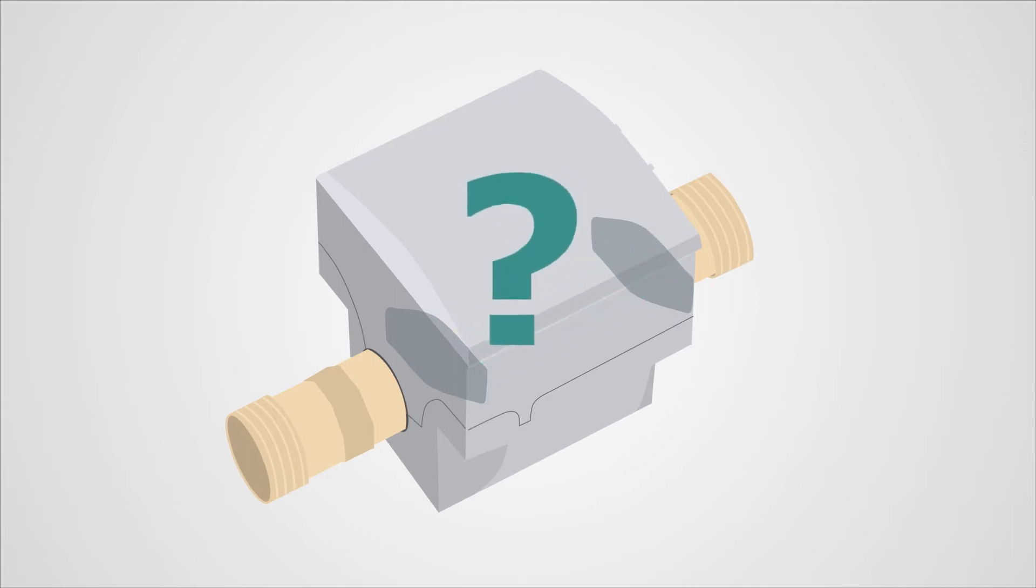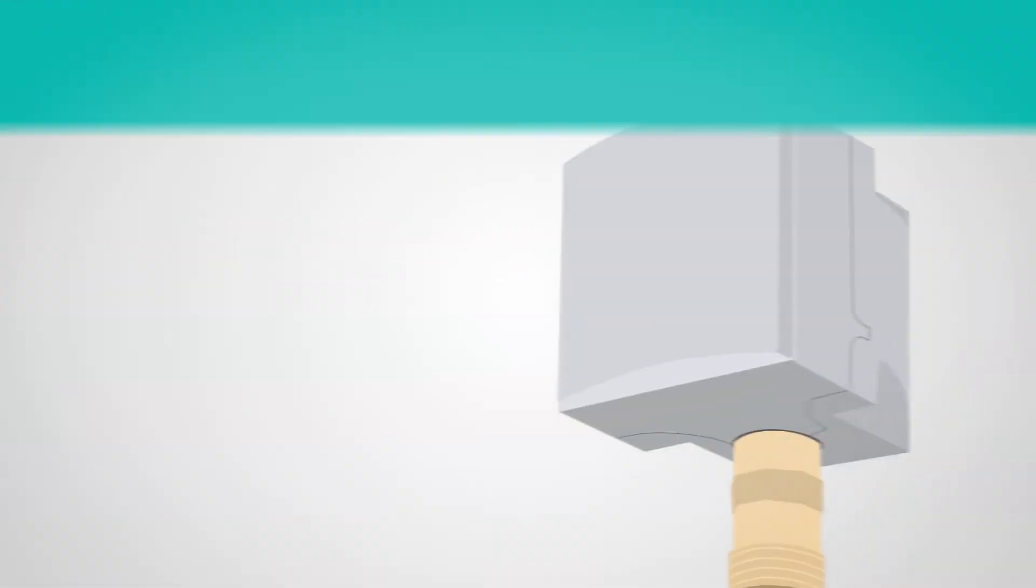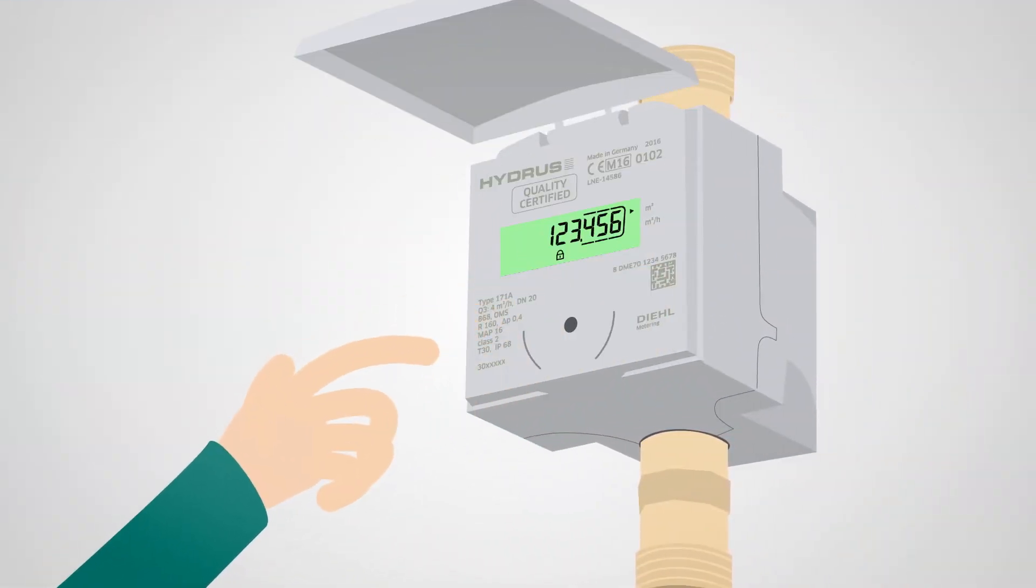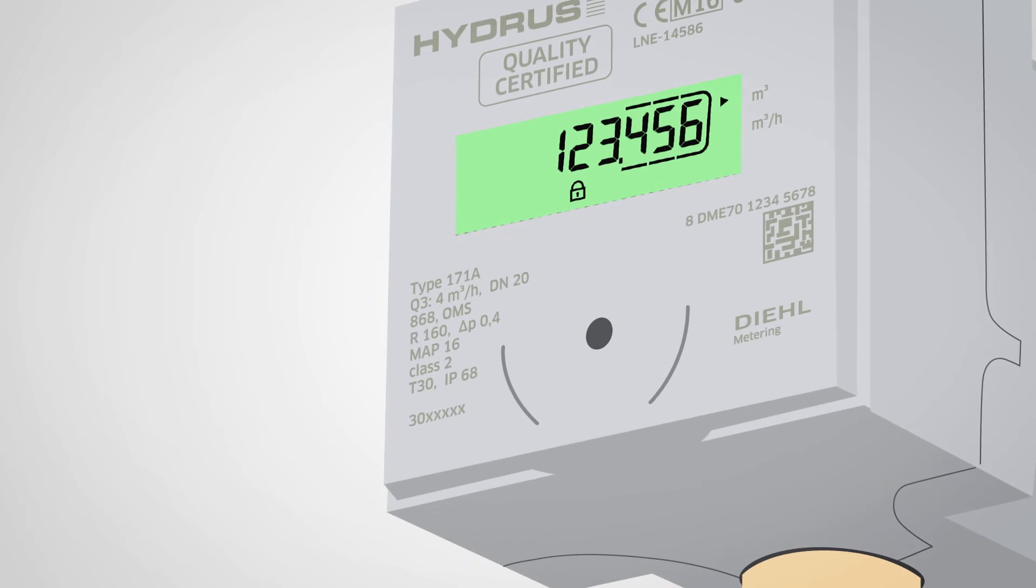And how do you read the Hydrus water meter? Mr. Smith simply opens the counter's lid and uses his finger to tap through the display. Mr. Smith gets all the relevant information in various loops.